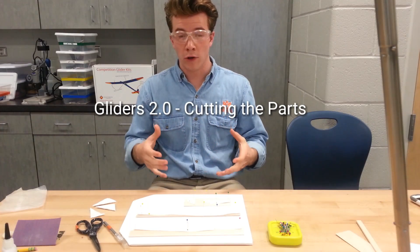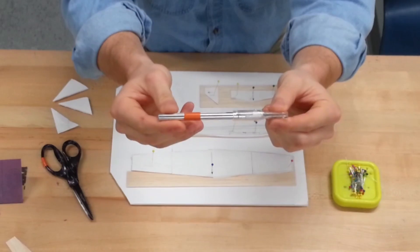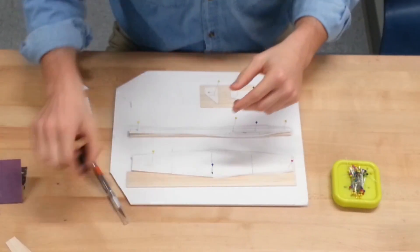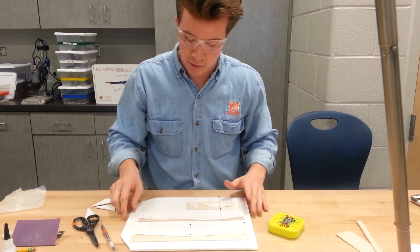We're ready to cut our pieces out of the wood now, so we're going to need a couple things. We'll need our exacto knife, a pair of scissors which is optional, and obviously our materials.